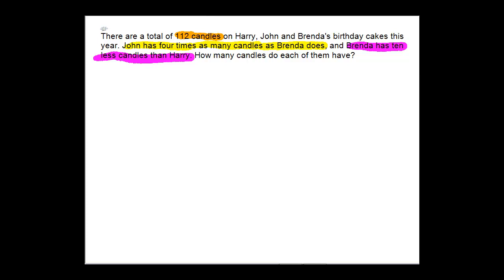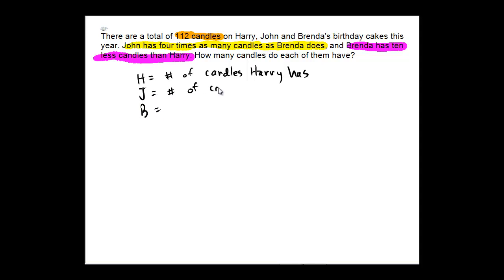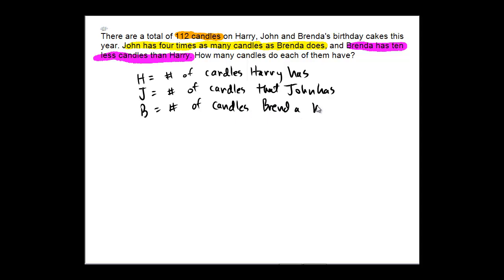I'm going to assign some variables to assist me here. We're going to let h equal the number of candles Harry has. Then we will let j and b be, respectively, the number of candles that John has, and b the number of candles Brenda has. We're assigning variables because we don't know what these numbers are at the beginning of the problem. Now we can take these and try to set up some equations that are true.